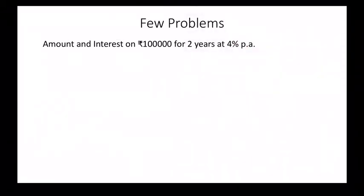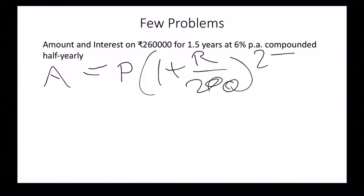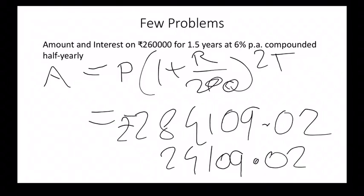Next problem: Amount equals, according to the formula, P times (1 plus R by 200) as it is half-yearly, raised to 2T. Directly telling the answer, but you need to calculate completely, it would give us 2,84,109.02 rupees, and the interest would be 24,109.02 rupees.